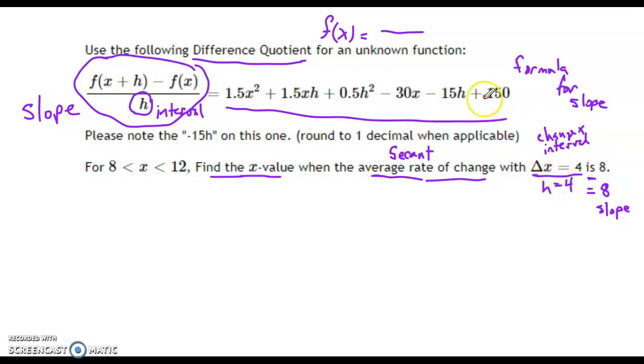The other thing is I'm going to plug 4 in for h. So right now, I am playing with the idea that I got 1.5x squared plus that 1.5x. And now I know my h's value. That's 4. And then plus 0.5h squared. Plug in 4 for that h. Minus 30x. Minus 15 times h, which is 4. Plus 150. And of course, I'm setting that equal to 8.